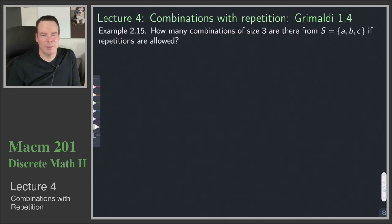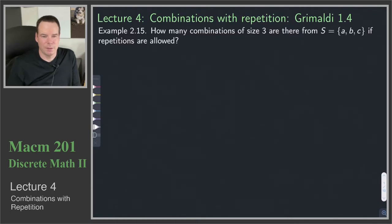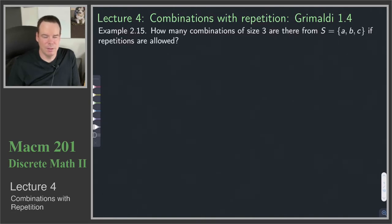Hi everyone, welcome back. In this lecture we're going to look at combinations with repetition. So let's dive into the first example. How many combinations of size 3 are there from the set S, consisting of the three elements A, B, and C, if we're going to allow repetition?